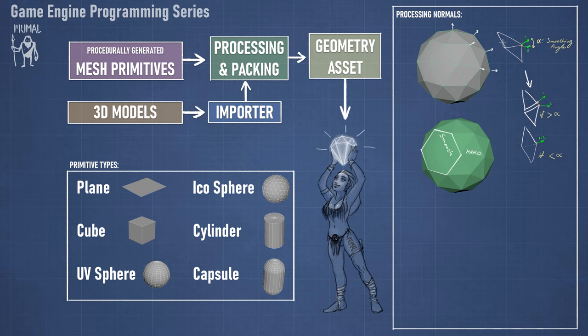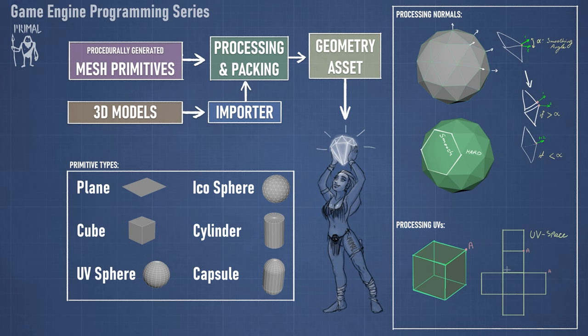That is the responsibility of the normal processing stage. We can do the same for UV coordinates — the same corner point A of a cube will be mapped to different points on the UV plane, and when that happens we also need to split the position vertices. Later, when we have tangents, we need to do the same. There are more processing stages we'll add later when we have an importer for 3D models, but right now these two are all we need. Essentially we need to write two functions that do this for us.